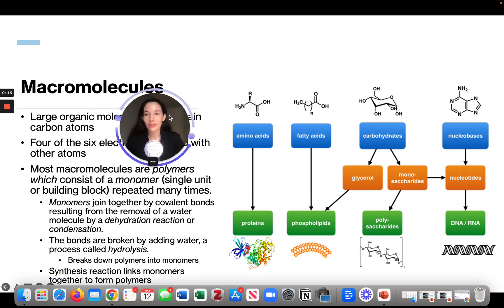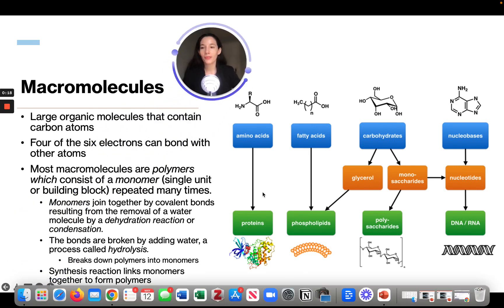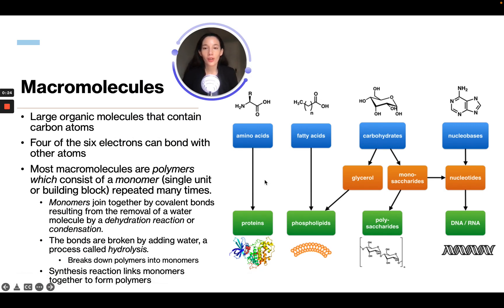Macromolecules are large organic molecules that contain carbon atoms. Four of the six electrons can bond with other atoms, and most macromolecules are polymers, which consist of a monomer, a single unit or building block, repeated many times.